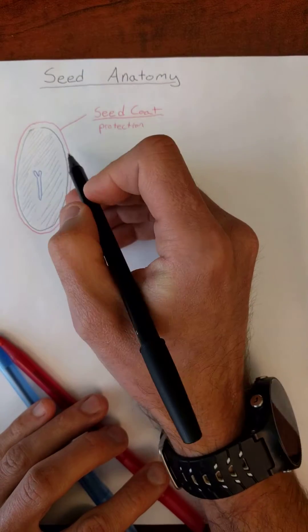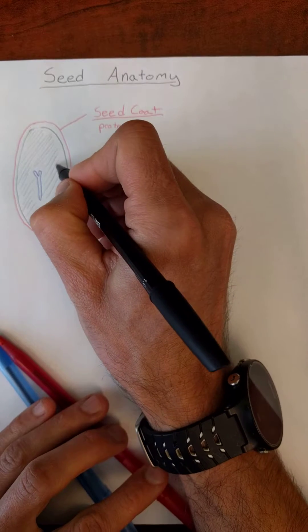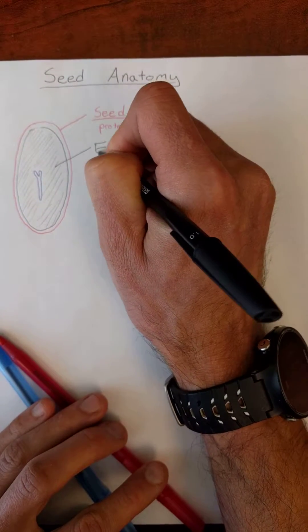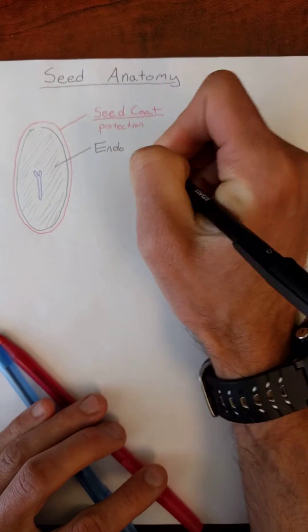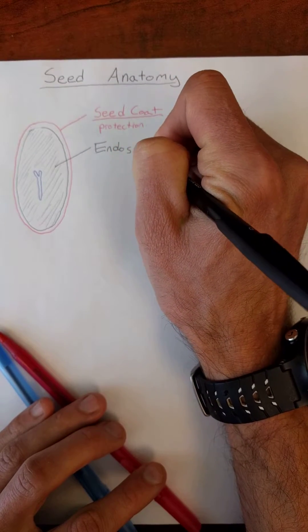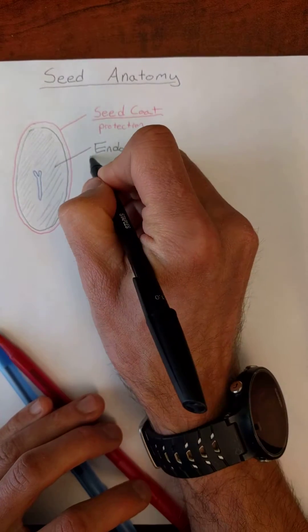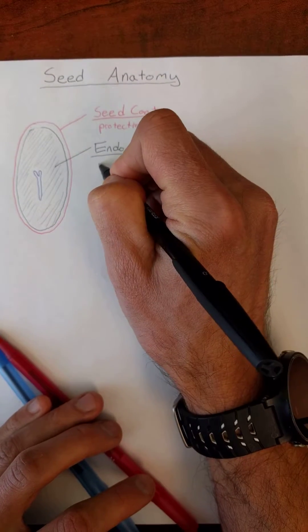Next layer, all the black that I've highlighted in on this, that is going to be your endosperm. Endo, meaning within.